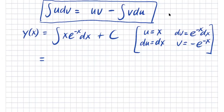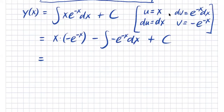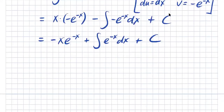Applying integration by parts: the first term is u times v, which is x times negative e to the negative x. Then we subtract the integral of v du, giving negative e to the negative x times dx, plus C. This gives us negative x e to the negative x plus the integral of e to the negative x dx plus C.